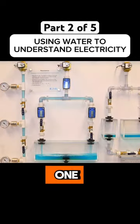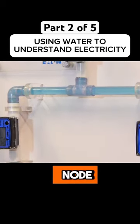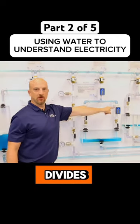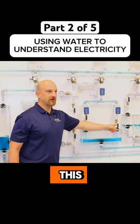Now this one, we simulate current coming into a node, we call it, or water coming into a node, and the water divides according to the path of resistance. So in this case, this valve and this valve are both open.